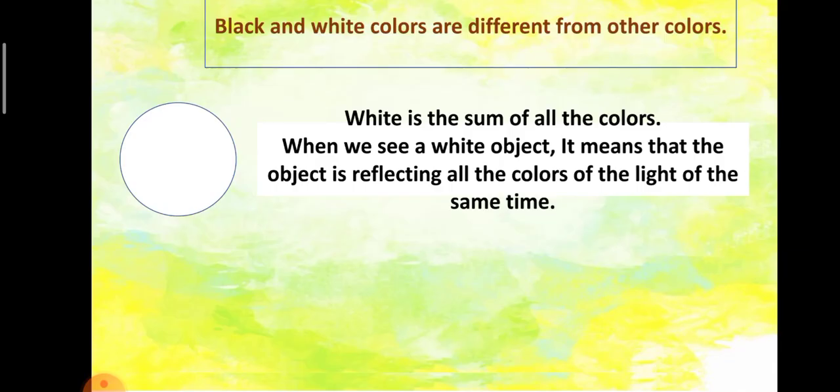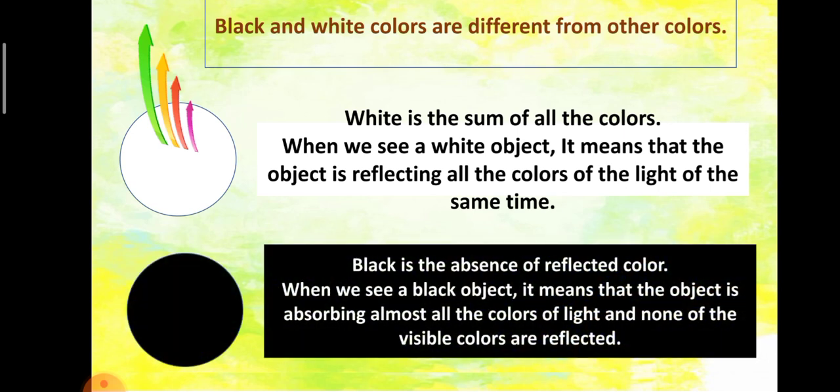Black and white colors are different from other colors. White is the sum of all the colors. When we see a white object, it means that the object is reflecting all the colors of the light at the same time. On the other hand, black is the absence of reflected color. When we see a black object, it means that the object is absorbing almost all the colors of light and none of the visible colors are reflected.